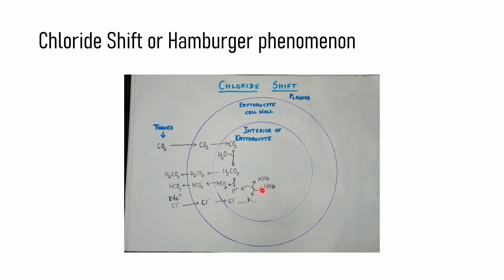Hydrohemoglobin will then dissociate, forming H+ ions and releasing hemoglobin free so that oxygen can come and bind to it. This increased hydrogen concentration will help in the production of more and more water molecules, thereby allowing the reaction to occur again and again.